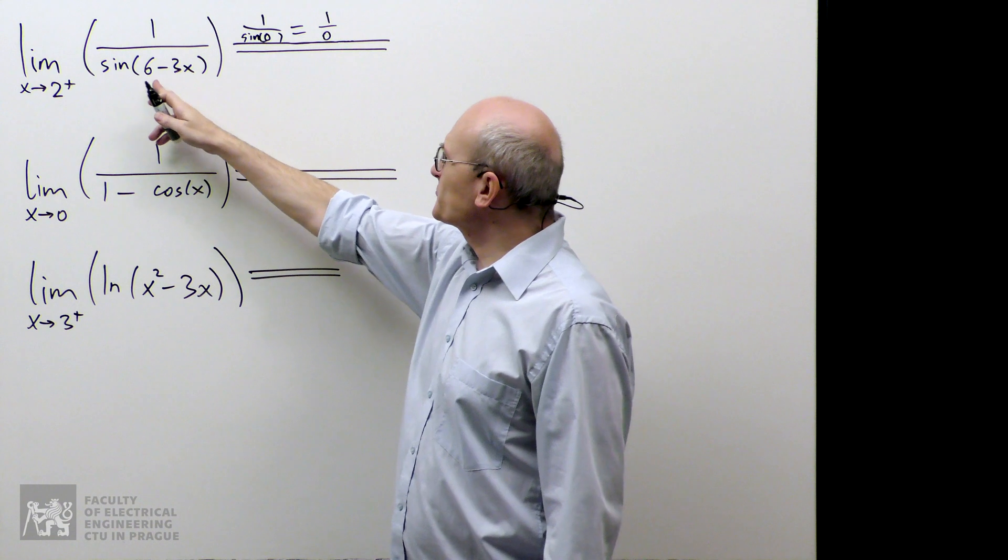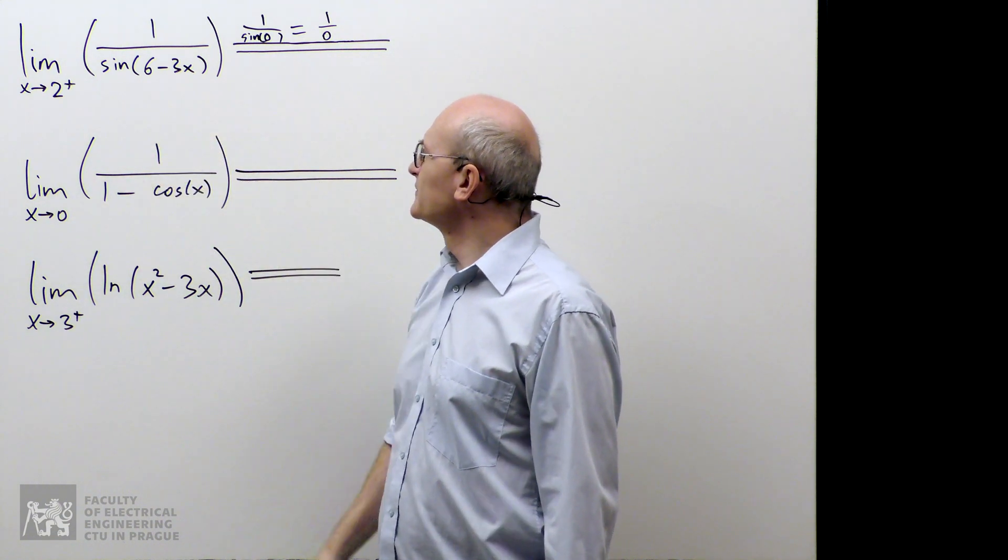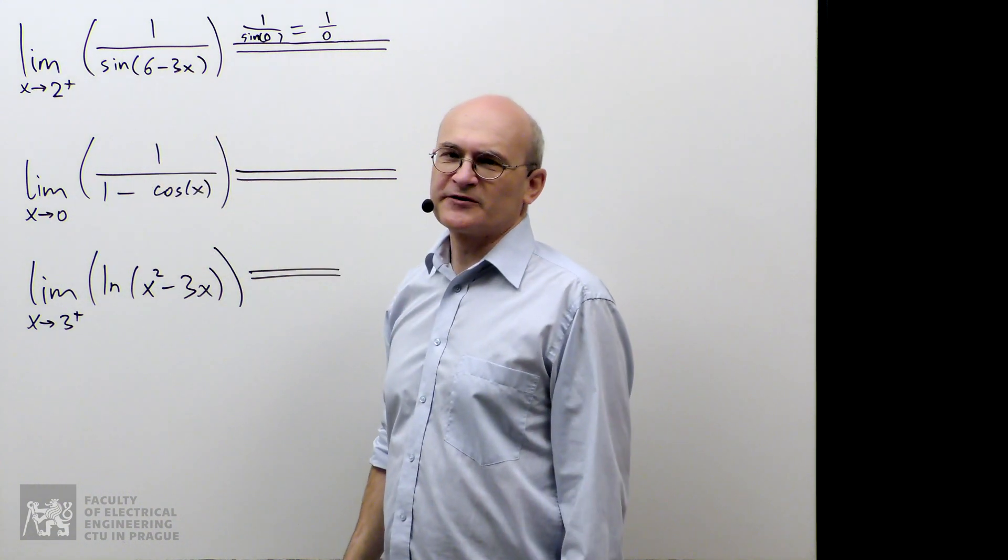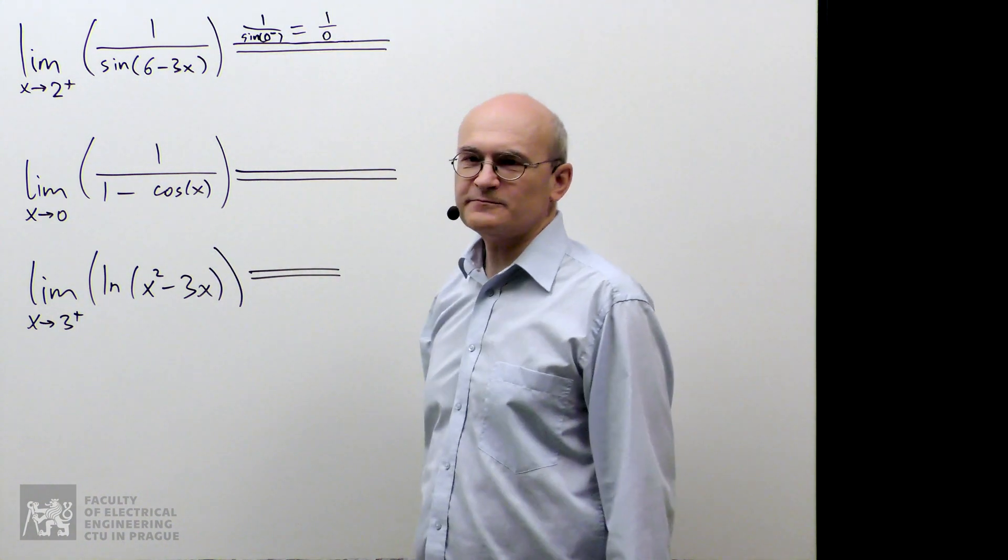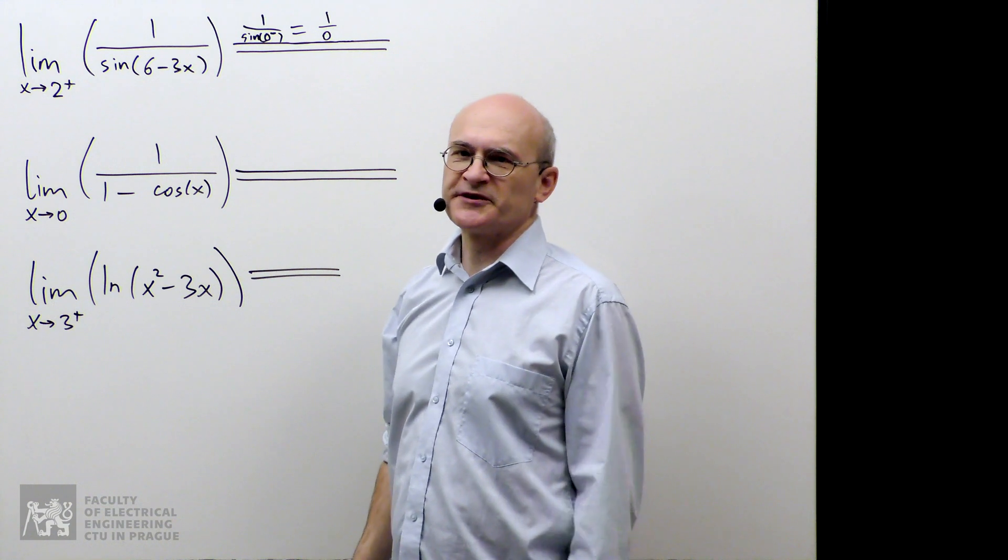And then when I subtract it from 6, it becomes a negative number. So I suspect that this 0 here is a negative 0. So it's the first approach, intuitive.